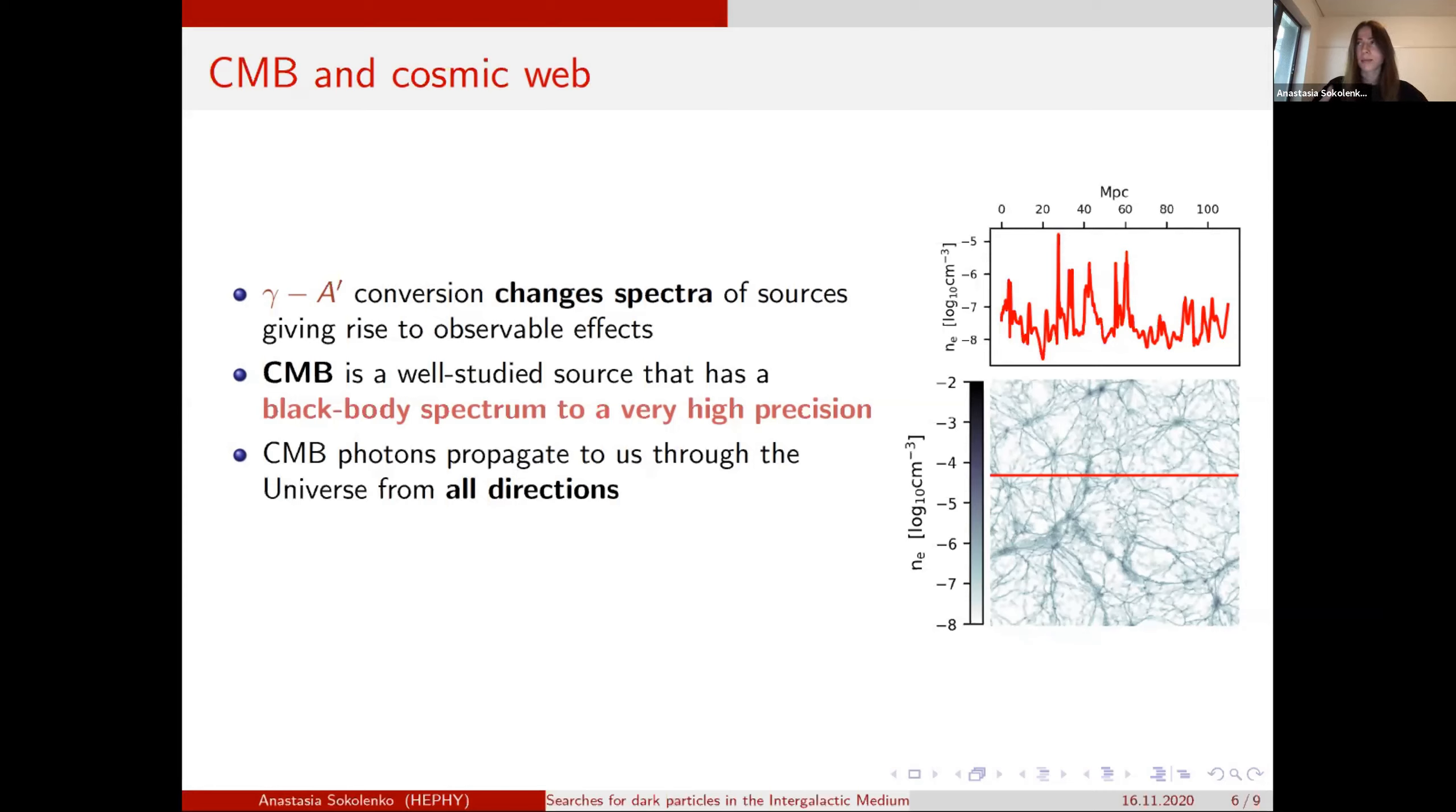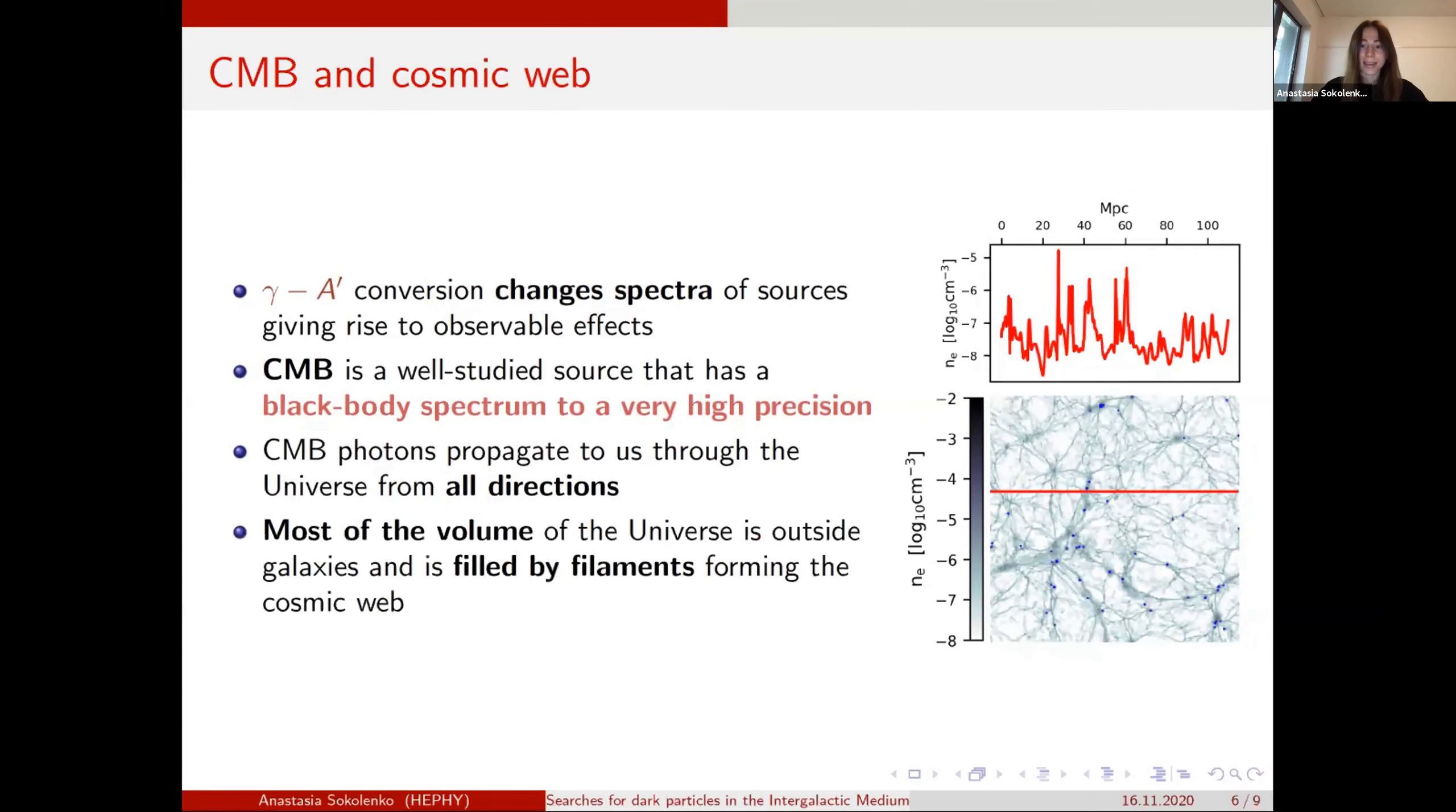And the CMB comes to us from all directions, so it's an all-sky survey. And naively, we would expect that galaxies take a lot of part of space in the universe, but it's not so. And most of the path that photon travels to us, it's in the so-called cosmic web, that is filled with filaments. At this spot, these blue dots, it's several radii of galaxies in five megaparsec slice. So you can see that it's a very small fraction of the whole universe. It's a simulation.